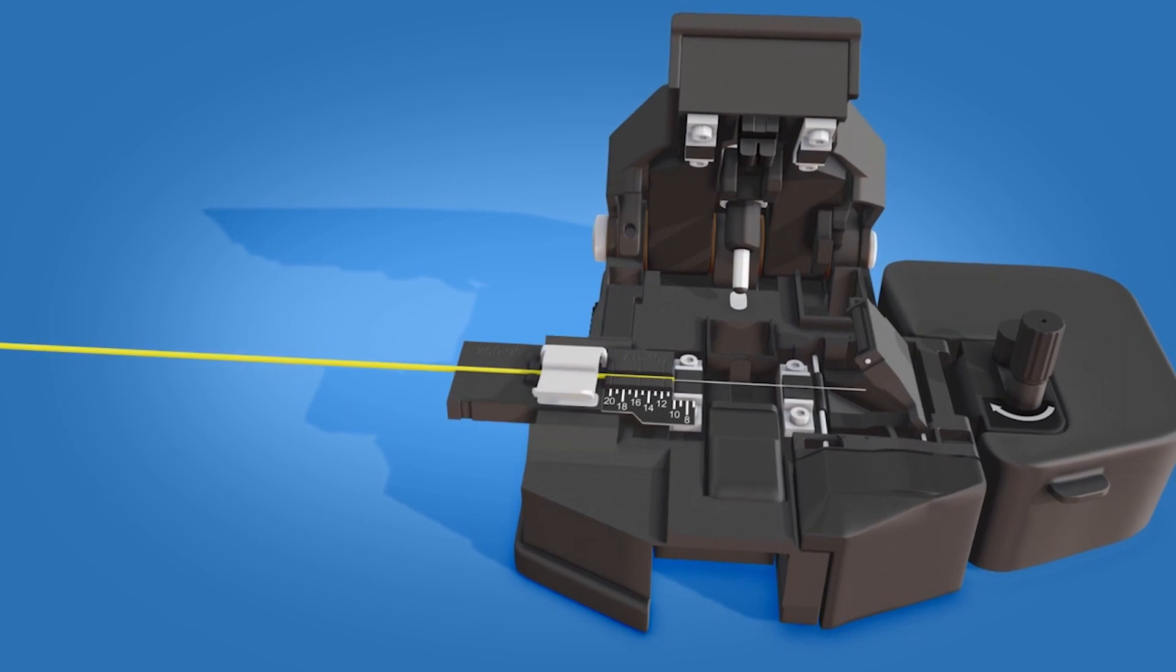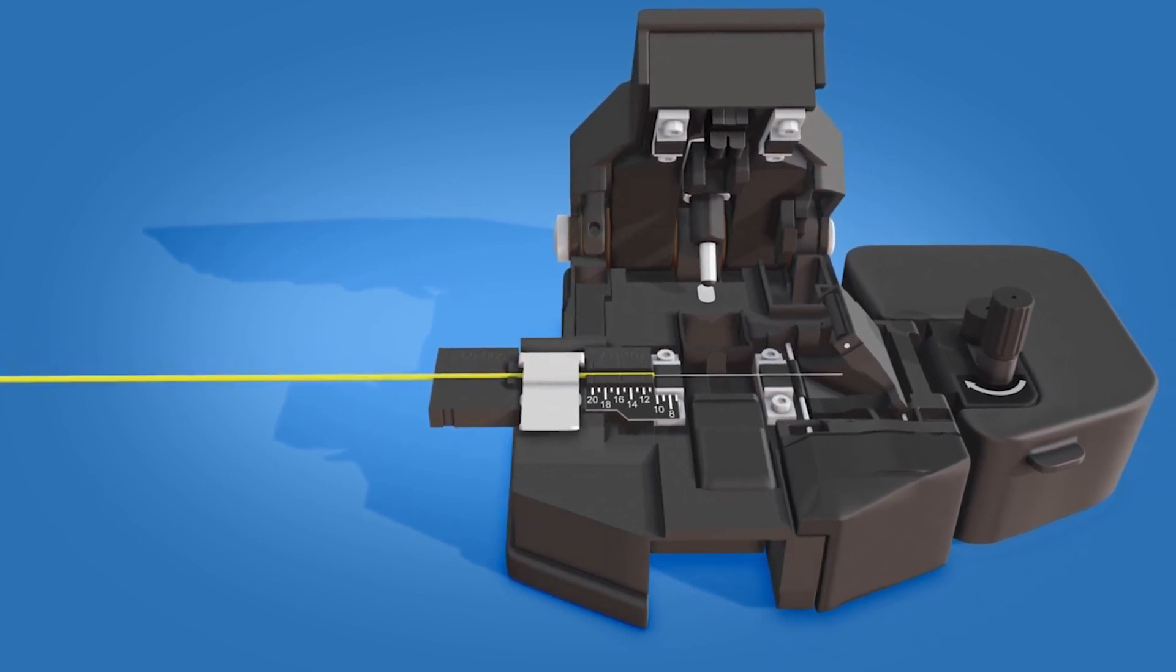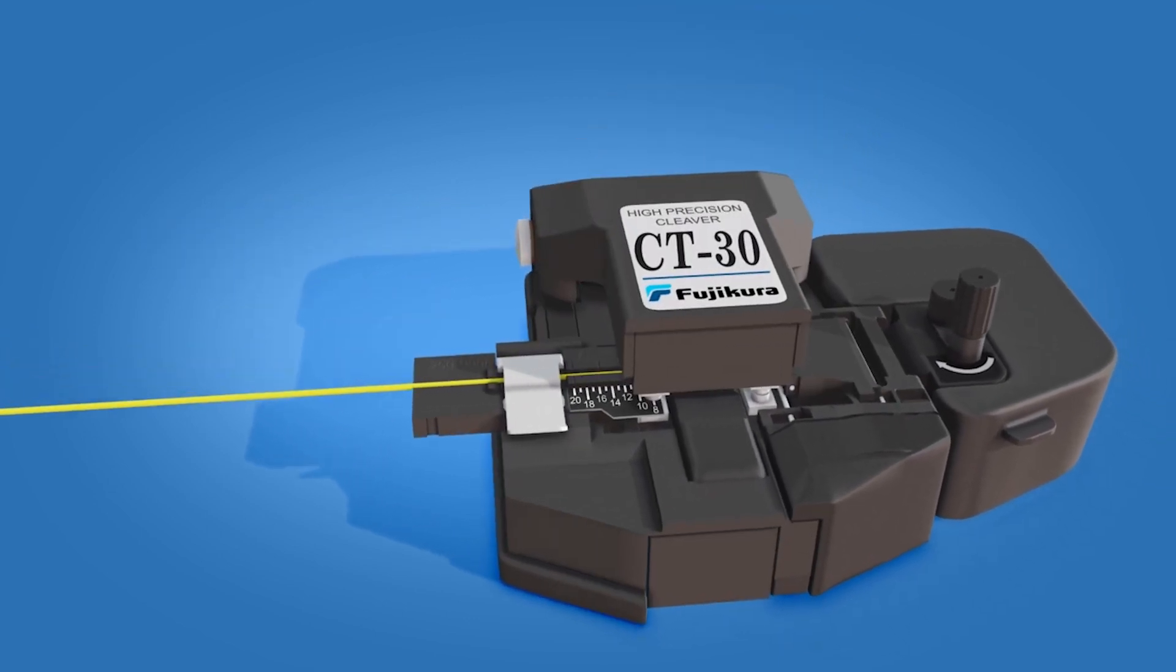Close the clamp. Push the cutting lever downward to cleave the fiber.